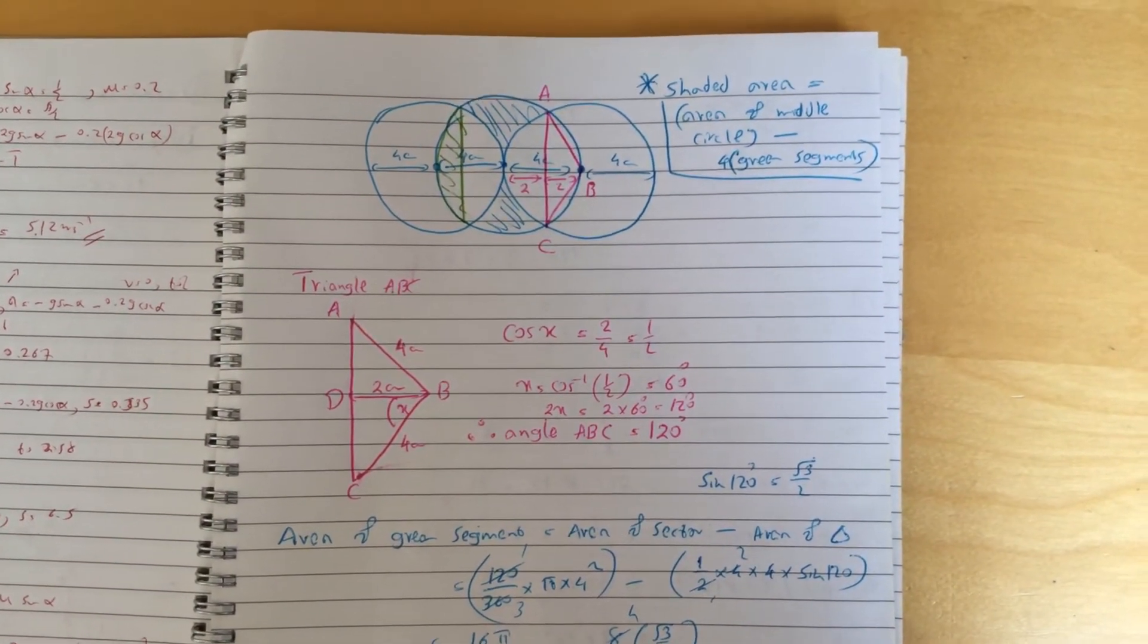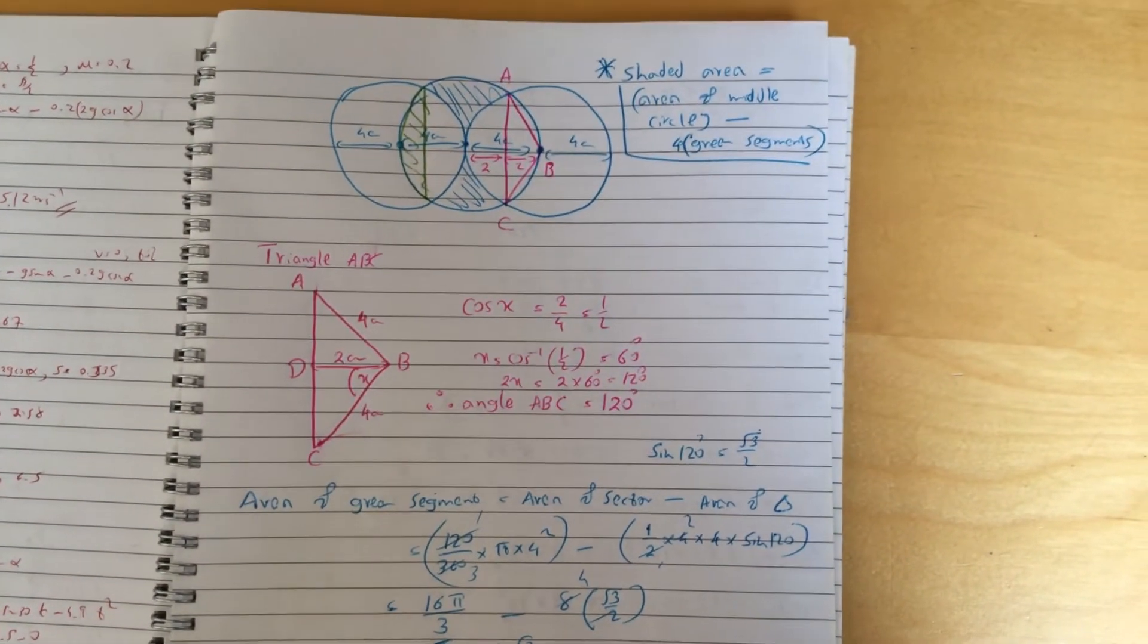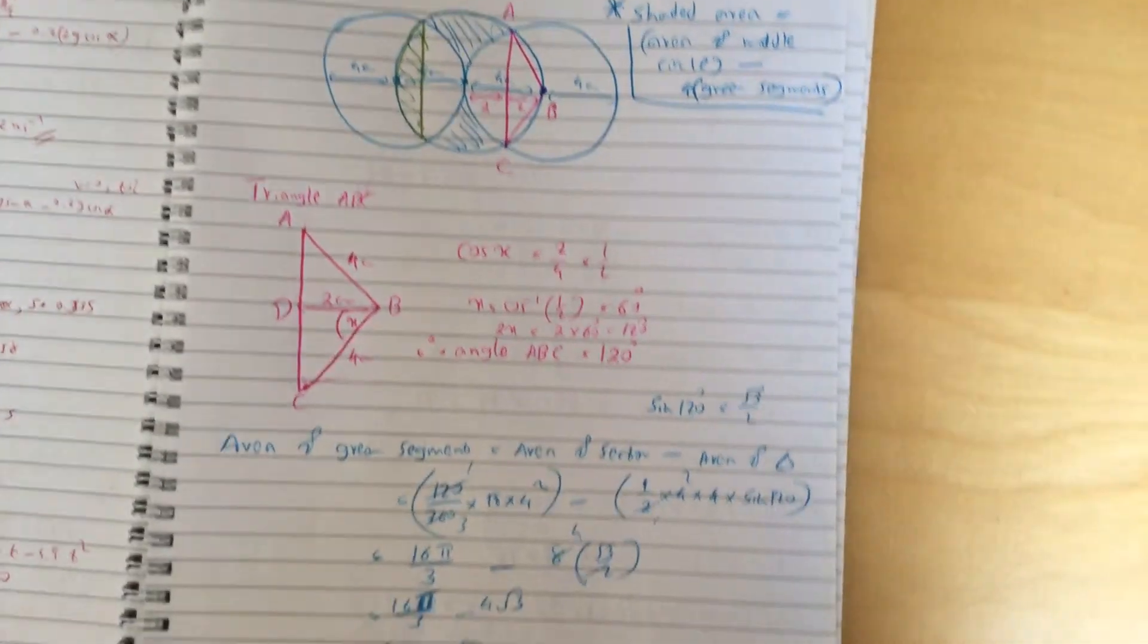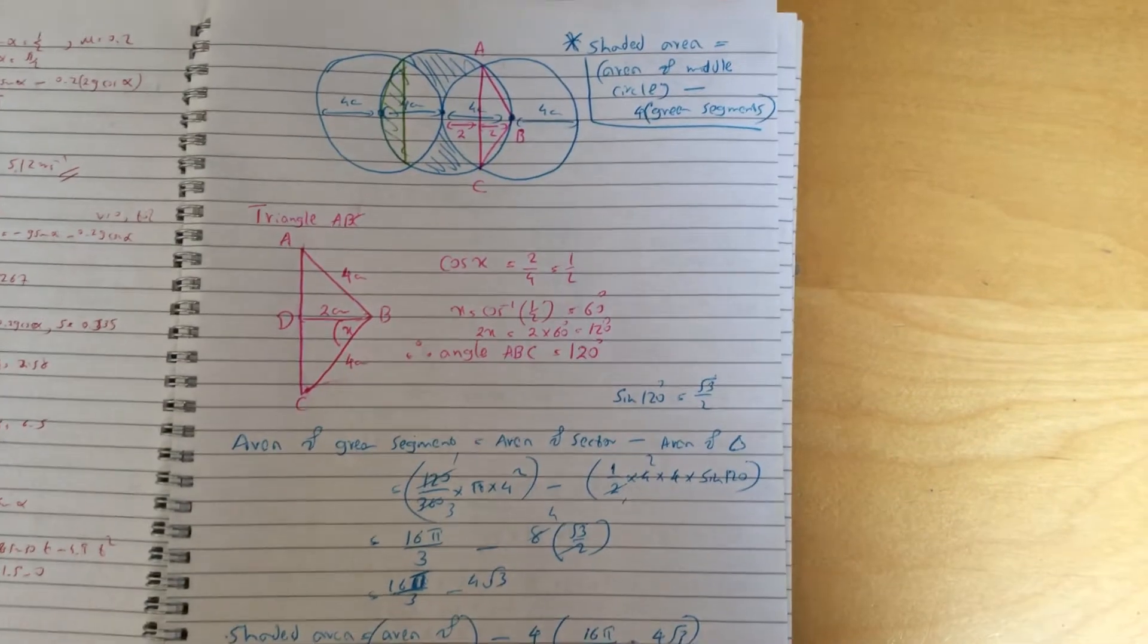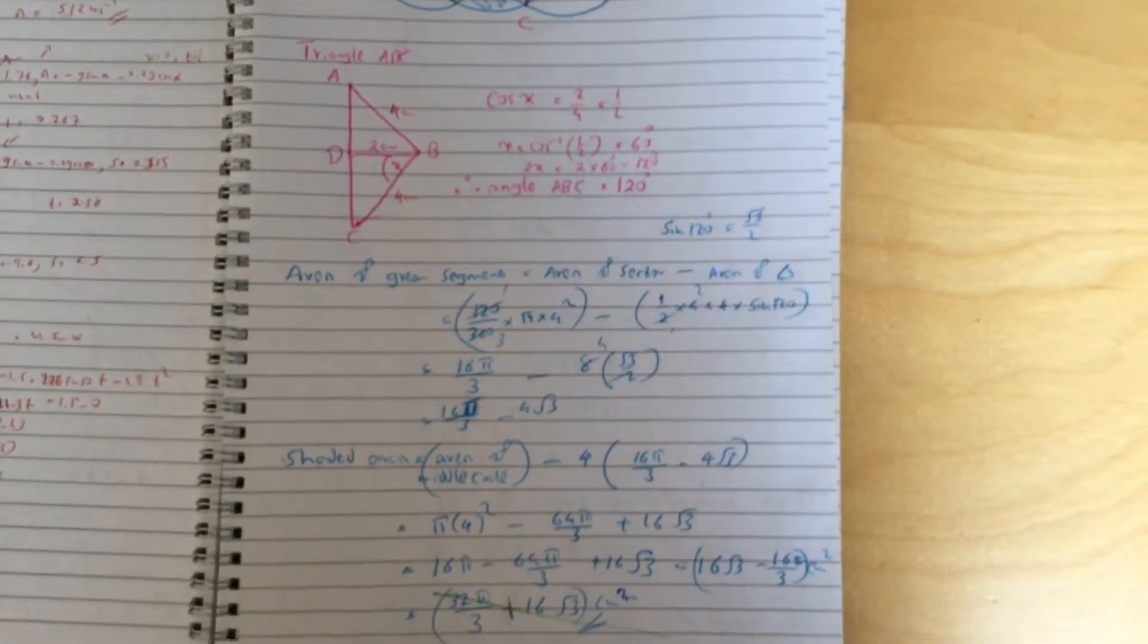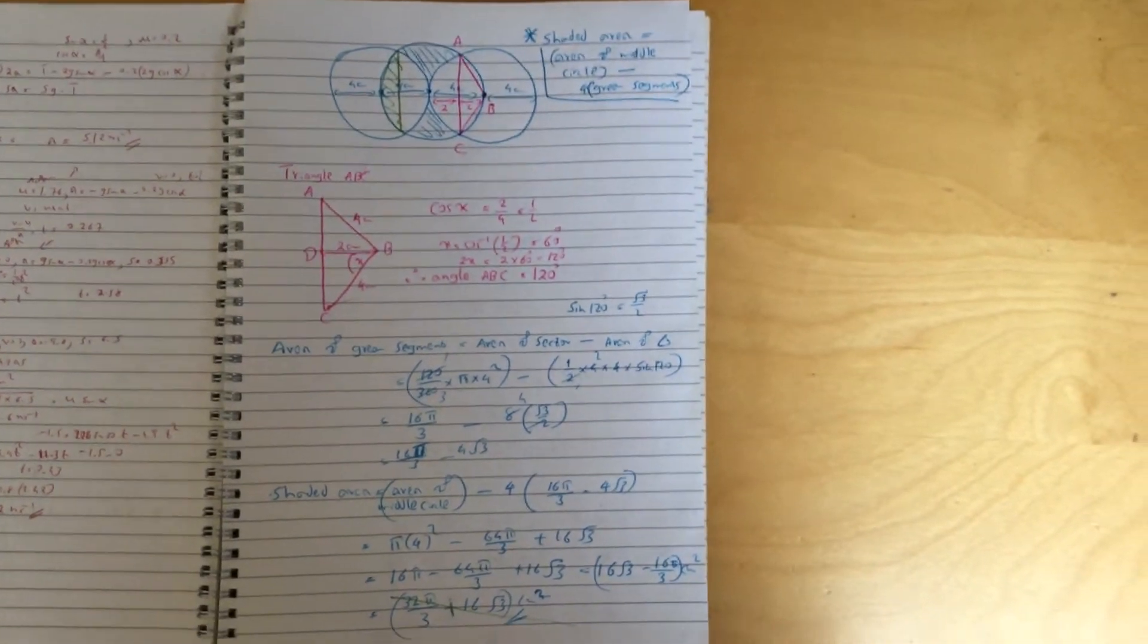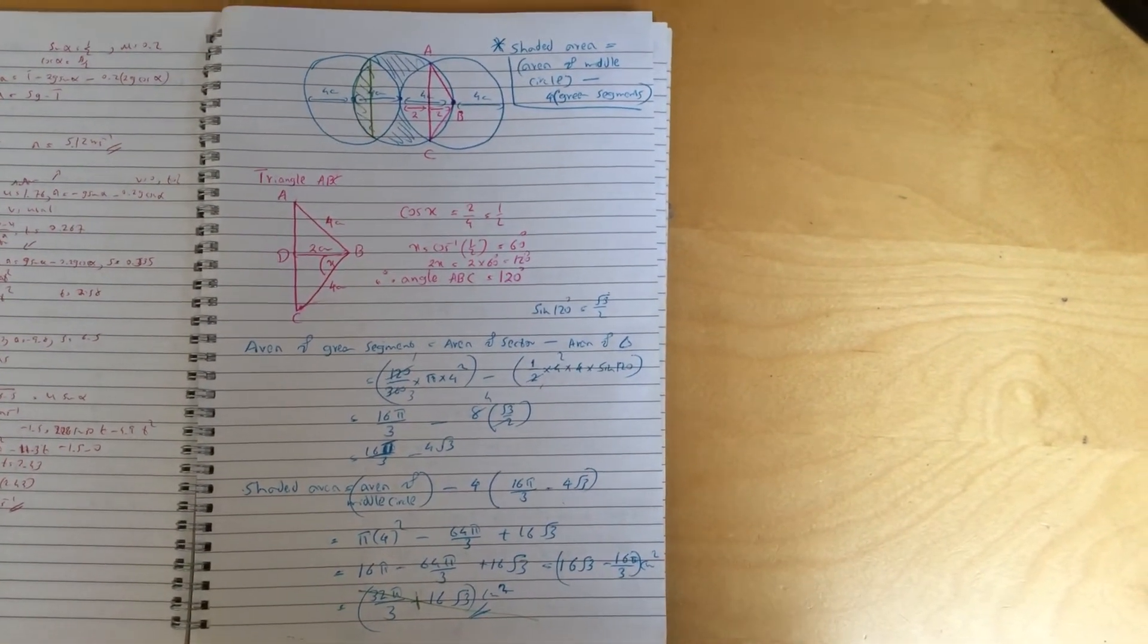I worked out, first of all, the angle of this little pink triangle, and then from there I worked out the area of the segment of the green shaded region there. The area of the shaded region asked in the question is basically area of the middle circle minus four of those green segments.